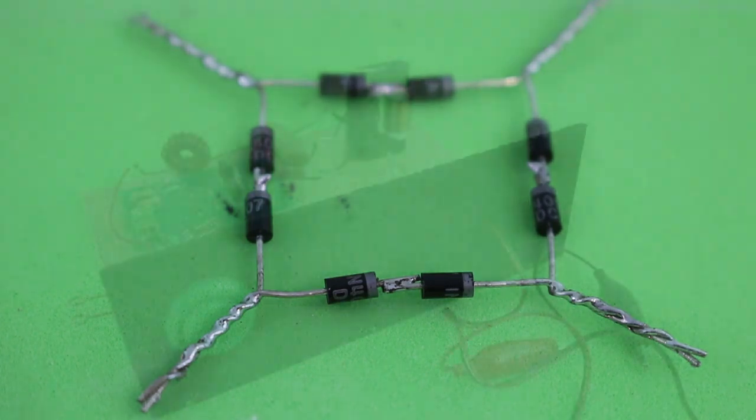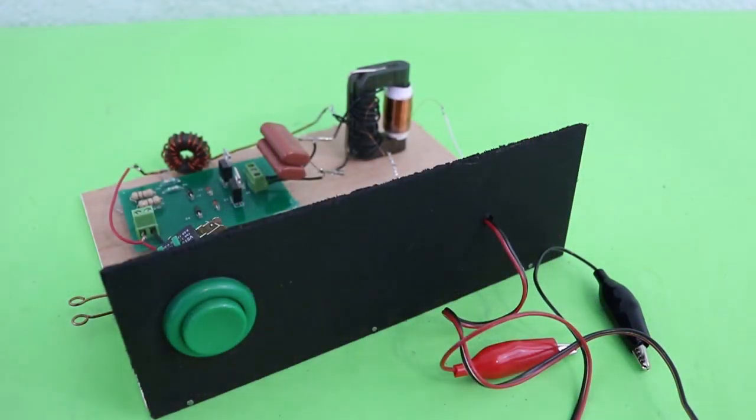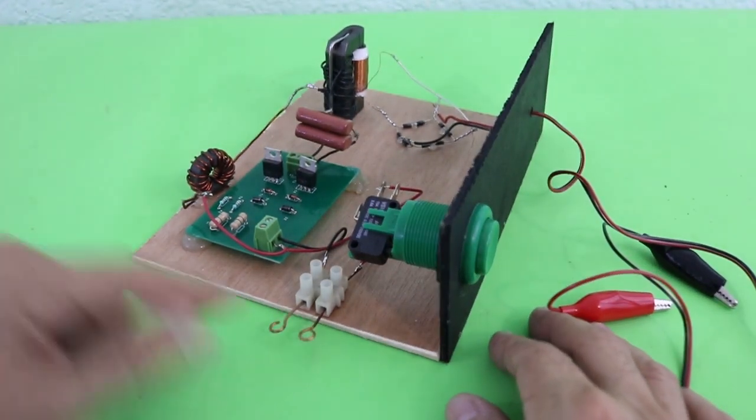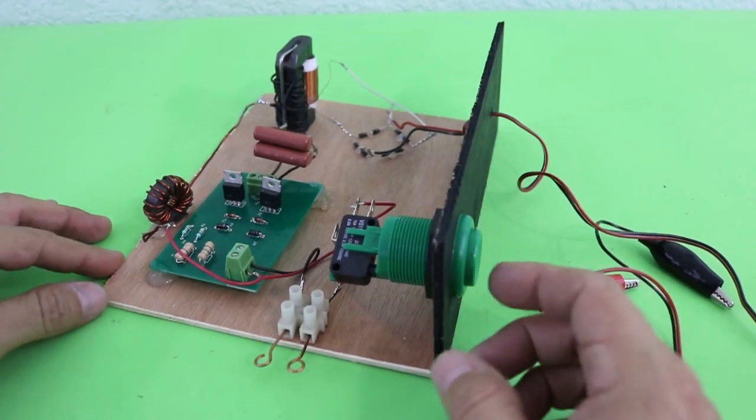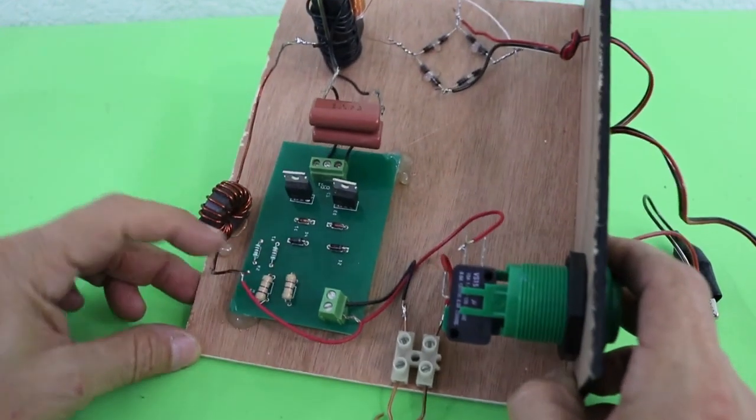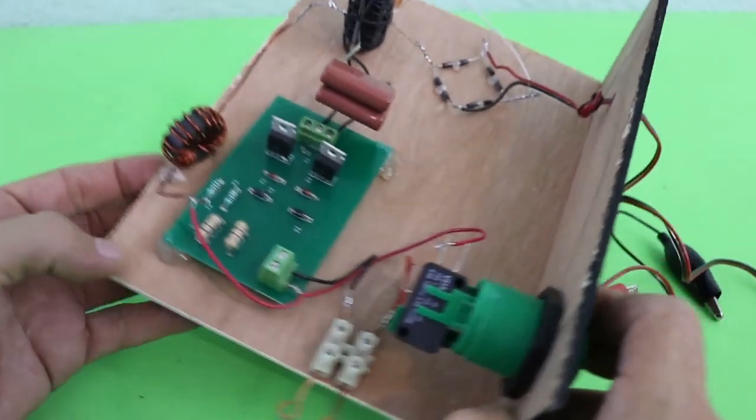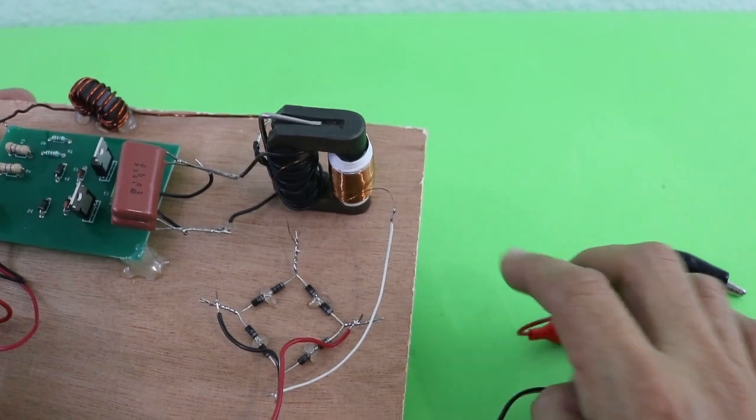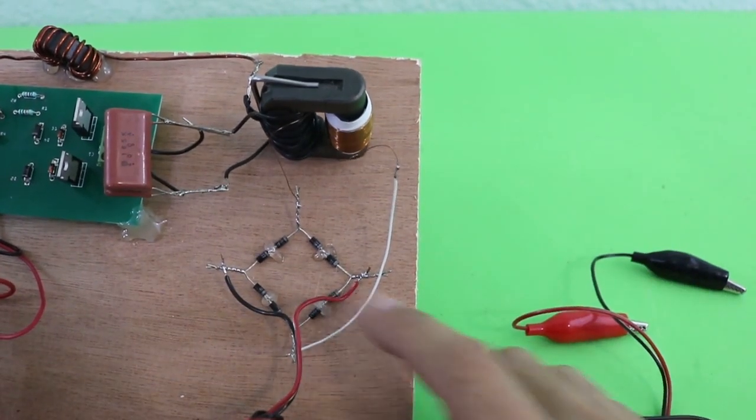Here I have everything assembled. This is for the input voltage. I added a switch, push button, the Mazzilli circuit, and here we have the high voltage transformer and the diodes.